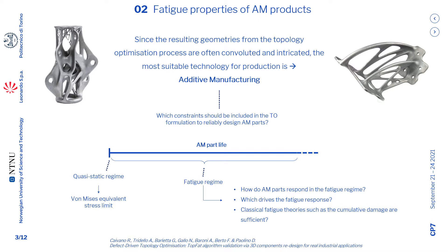Topology optimization has been studied since 1980. However, the final geometries obtained with this method were almost always complex and very difficult to be realized through traditional and conventional manufacturing techniques. Recently, advances in additive manufacturing processes allow us to produce those geometries, even if convoluted and integrated. However, it is crucial to understand which are the key constraints to be included in the topology optimization setup in order to safely design parts for additive production. If the fatigue regime is considered, several questions must be answered to understand which constraints and fatigue model must be included — for example, how AM parts respond in the fatigue regime, or what drives the fatigue response.